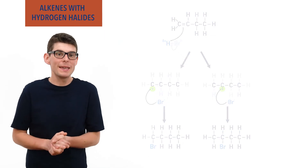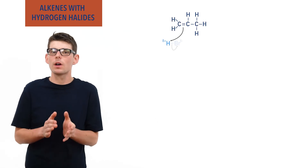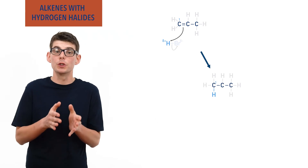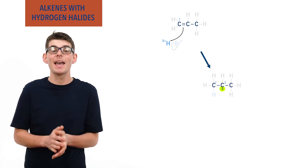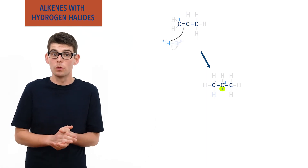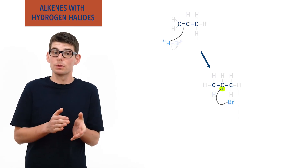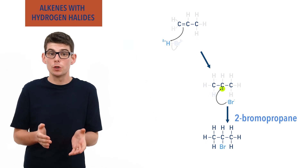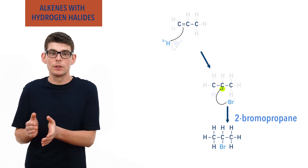For example, if propene reacts with hydrogen bromide, HBr, we can see that if the hydrogen bonds to carbon 1 in the propene molecule, carbon 2 will end up with a positive charge in the intermediate — a secondary carbocation. The bromide ion formed in step 1 will then bond to this carbon 2, and as a result, 2-bromopropane will get formed, since the bromine group is bonded to carbon 2 in the chain.